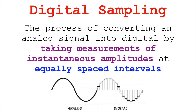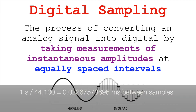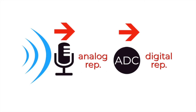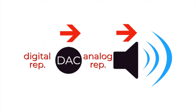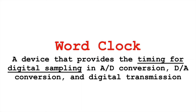We've sampled our amplitudes at evenly spaced intervals — in the case of a CD, 44,100 times a second. In an ideal world, these samples would all be occurring at precise divisions of that second. Those divisions are accomplished in a digital system with a word clock. A word clock is a device that provides the timing for digital sampling in analog-to-digital conversion, digital-to-analog conversion, and digital transmission — so whether you're doing your digital sampling, converting digital samples back to audio, or sending to another digital system, your word clock is determining that timing.